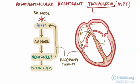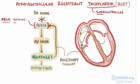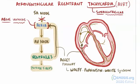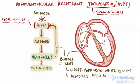This type of tachycardia is known as a supraventricular tachycardia, because the signal causing the fast heart rate originates above the ventricles. The most common type of AVRT is Wolff-Parkinson-White syndrome, where the accessory pathway is called the Bundle of Kent. This type of re-entry is known as an anatomical re-entrant circuit, because the accessory pathway is a fixed anatomically defined pathway.